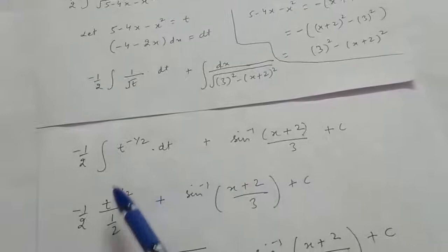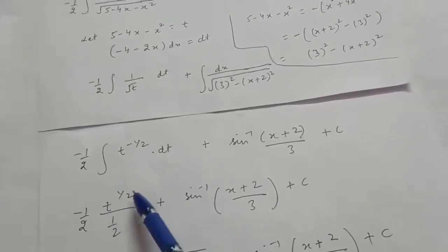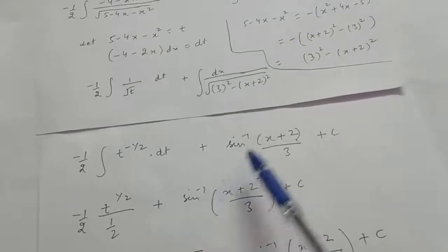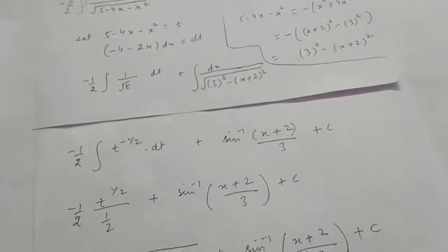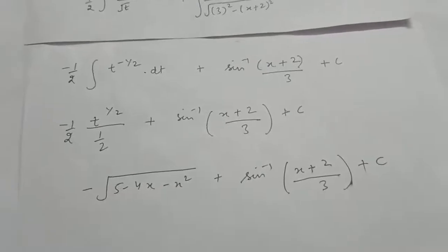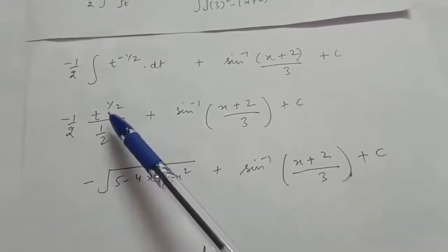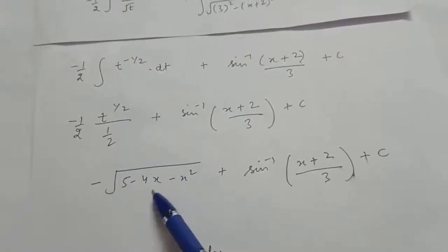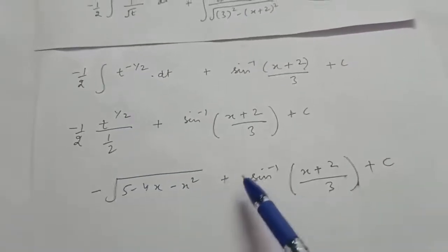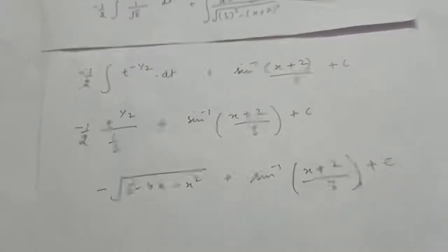Solving, (minus 1/2) times t^(1/2)/(1/2) simplifies to minus √t. Substituting t back as 5 minus 4x minus x², the final answer is minus √(5 minus 4x minus x²) plus sine inverse ((x+2)/3) plus c.